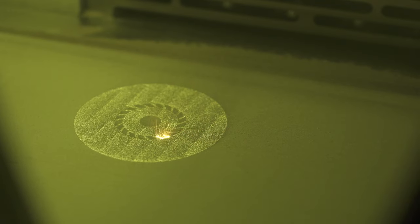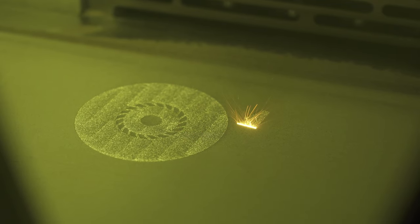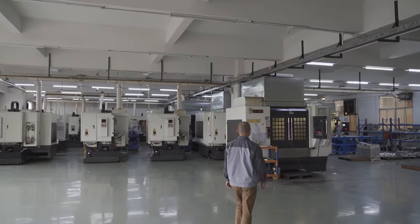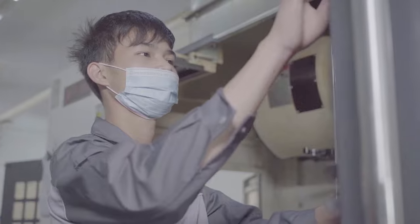DMLS and SLM can produce accurate parts to 0.1mm, but if even tighter tolerances are required we have a CNC zone where we can machine the parts to guarantee most tight tolerances.